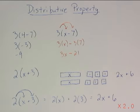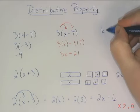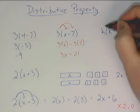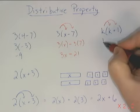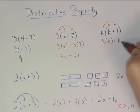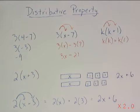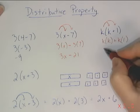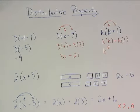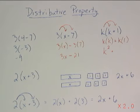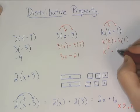What happens if there's more than one variable in the expression that I'm trying to distribute? Maybe I have something like k times the quantity k plus 1. Make sure to distribute k to all of the terms inside the parentheses. So this k will be multiplied by this k, and this k will be multiplied by 1. What happens when I multiply k times k? Any value multiplied by itself can be represented as that value squared. So k times k gives us k squared, plus k times 1 gives us 1k, which is the same thing as just k.